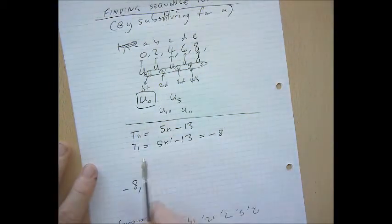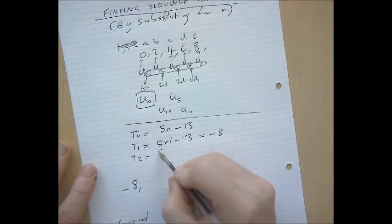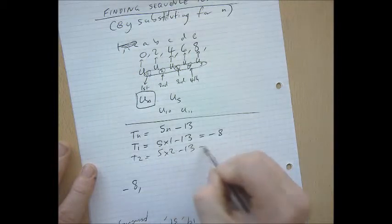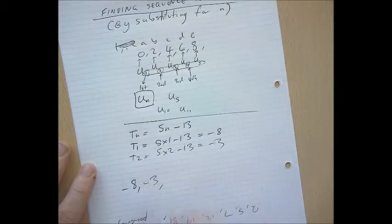Now, put a 2 where n is. 5 times 2 minus 13. We get negative 3. That means the second term is negative 3.